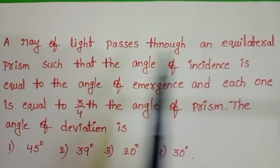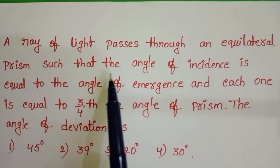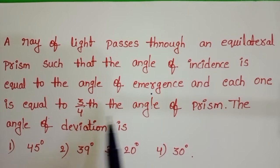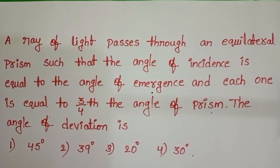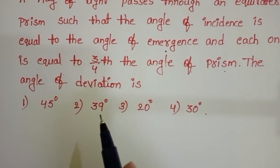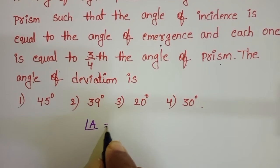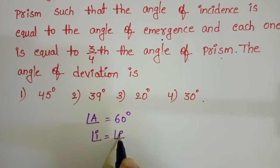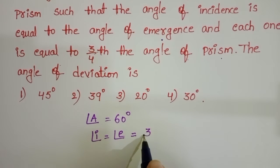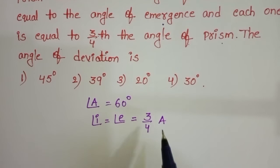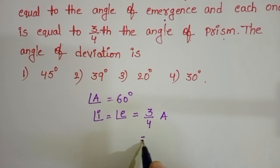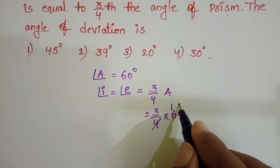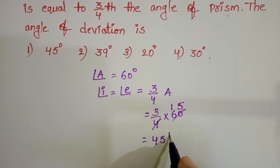A ray of light passes through an equilateral prism such that the angle of incidence is equal to the angle of emergence, and each one is equal to 3/4 of the angle of prism. The given prism is equilateral, so angle A equals 60 degrees. Therefore, the angle of incidence equals 3/4 into 60, which gives 45 degrees.